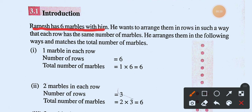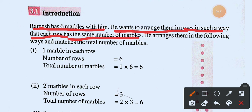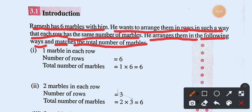Ramesh has six marbles with him. He wants to arrange them in rows in such a way that each row has the same number of marbles. We want to arrange them in the following ways and match the total number of marbles.